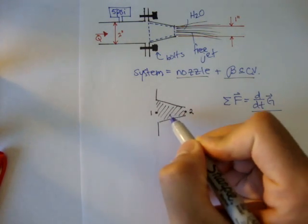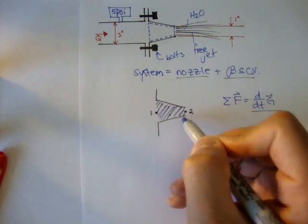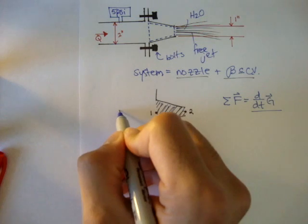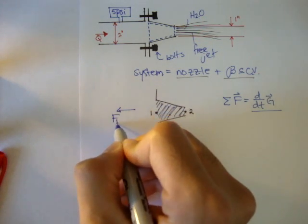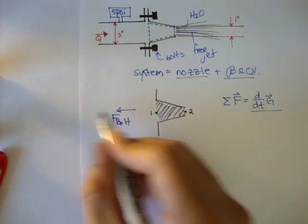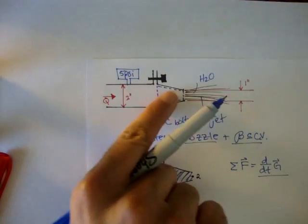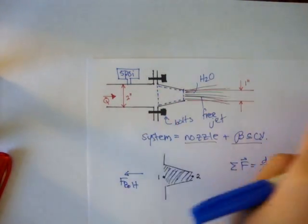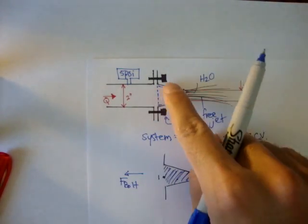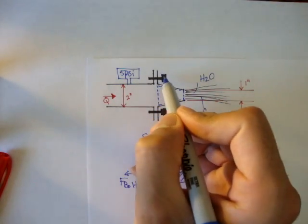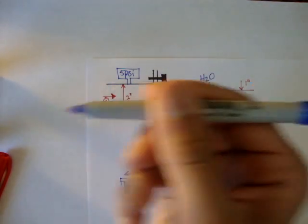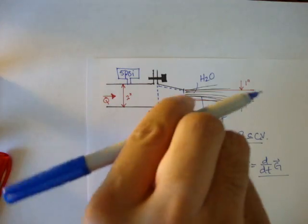We know this is the control volume. We know that the resultant forces of the bolts, we just call it bolt, is going to be this way. Because the water is getting pushed out that way. So it's wanting to push the nozzle with it. So the bolts have to keep it contained. The bolts have to be this way in order to keep the nozzle from going that way.